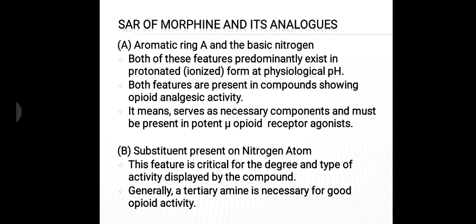Now we talk about the aromatic ring A and basic nitrogen. Both of these features predominantly exist in protonated form at the physiological pH. Both features are present in compounds showing opioid analgesic activity, meaning they serve as necessary components and must be present in potent mu-receptor opioid agonists.